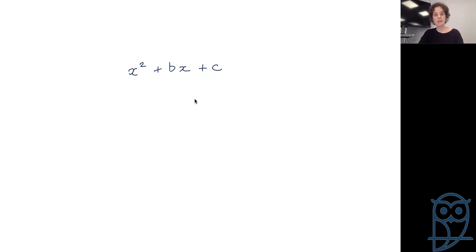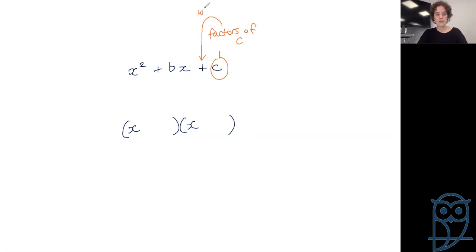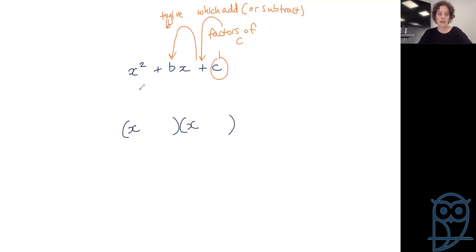Starting with x squared plus bx plus c — our simpler option. The coefficient of x squared is 1, so we don't have to worry about it. We know we are heading for (x)(x), and the only thing we've got to deal with is the numbers. The factor sentence is: factors of c, which add or subtract — if we had minus c — to give b. The sign of c and the sign of b tell us how to get our numbers.